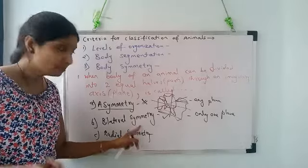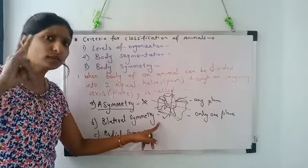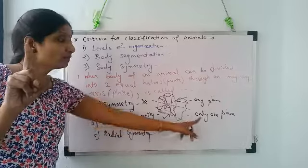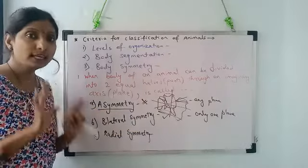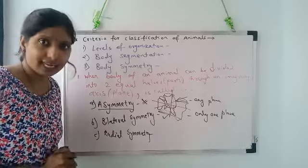This means the body of the animal gets divided into two equal halves only in any one of the imaginary planes, only in any one of the imaginary axes.